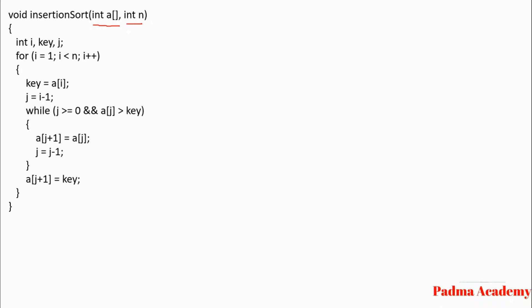The variables are int i, key, and j. The key variable is used for the sorting purpose. We will see how this code sorts the elements 10, 14, 5, and 1. Initially the value of i is 1 from the for loop, and i should be less than 4. The key variable is assigned a[i], that is a[1], which is 14. j is assigned i minus 1, that is 0.